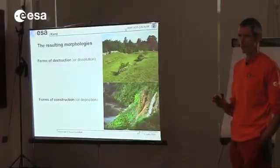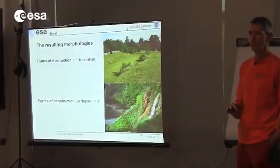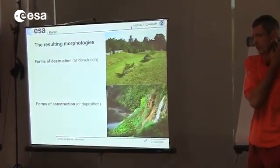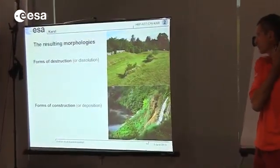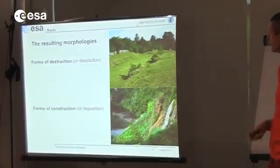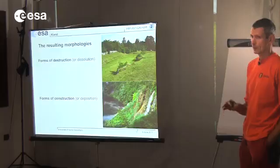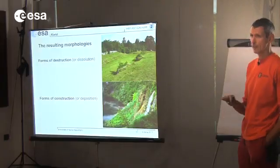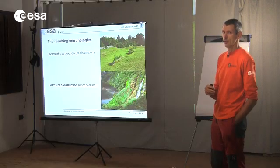We will see the typical landforms formed by karst processes that show the different morphologies shaped by the karst process. These are typical landscapes and landforms that derive from the dissolution of the rock, meaning that we find these only in karst areas — in places where you have limestone, dolostone, or gypsum at the surface.